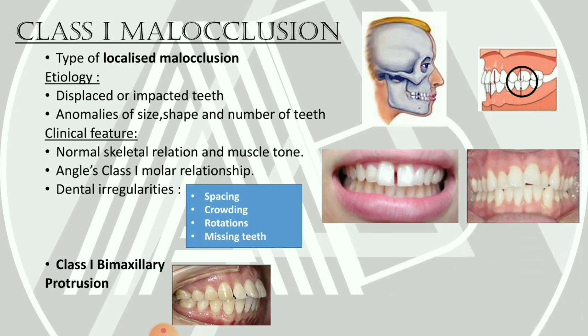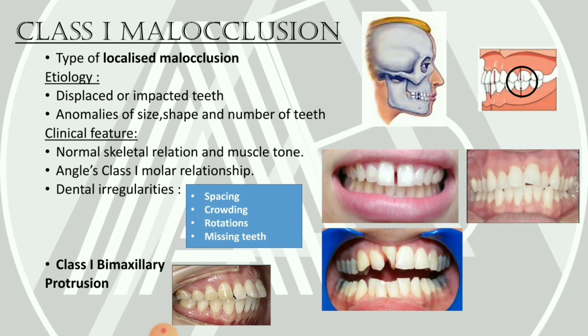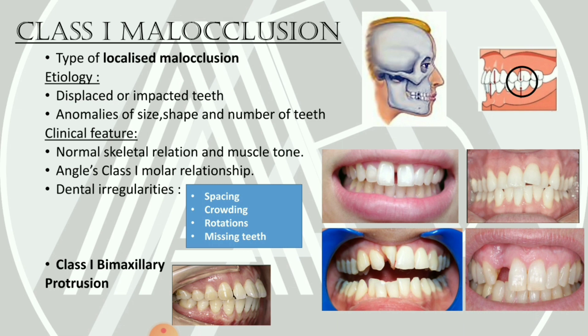The variant of Class 1 malocclusion is Class 1 bimaxillary protrusion. In this condition, the patient still exhibits a normal Class 1 molar relationship, but the dentition of both upper and lower arches are forwardly placed in relation to the facial profile. Even though both arches are forwardly placed, the molars remain in Class 1 relationship — which is why bimaxillary protrusion is classified under Class 1. The main deciding factor is the molar relationship.